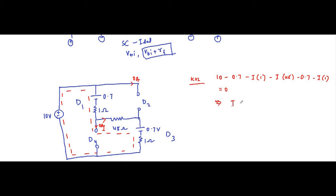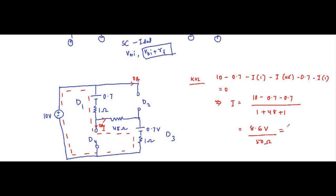The KVL equation will be: 10 minus 0.7 minus I×1 minus I×48 minus 0.7 minus I×1 equals 0. That implies I equals (10 minus 0.7 minus 0.7) divided by (1 plus 48 plus 1). That is 8.6 volts divided by 50 ohms, which equals 0.172 ampere, or 172 milliampere. This is the current flowing through the circuit.